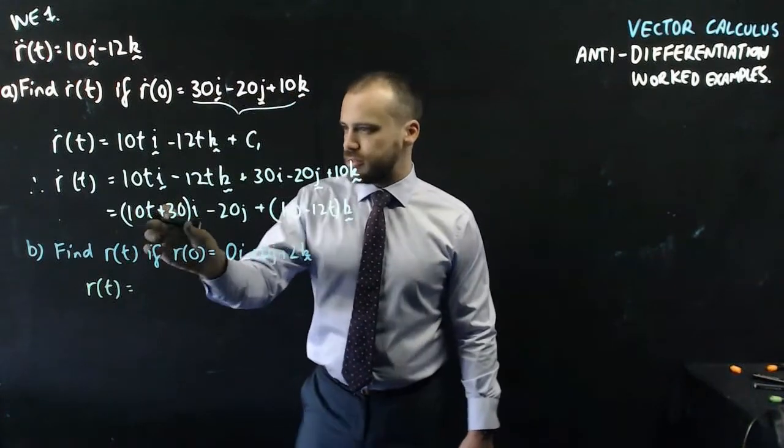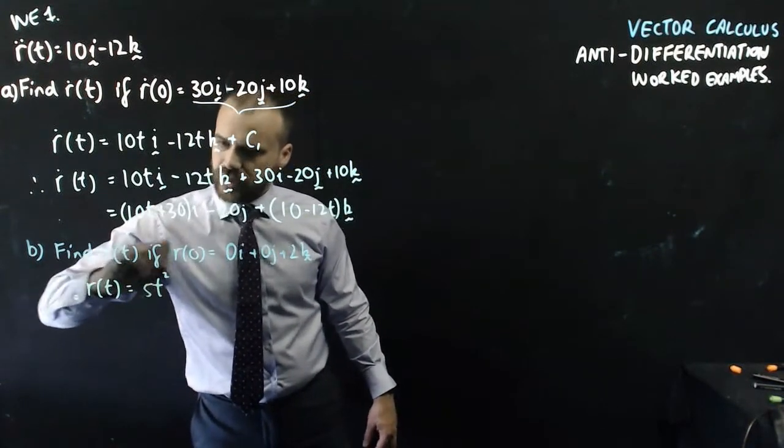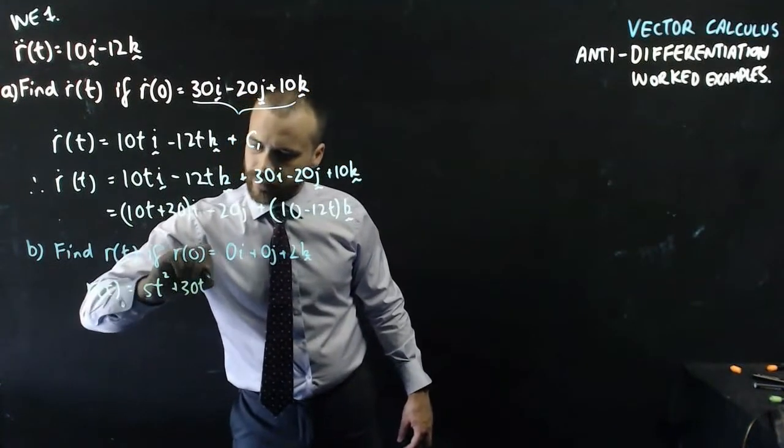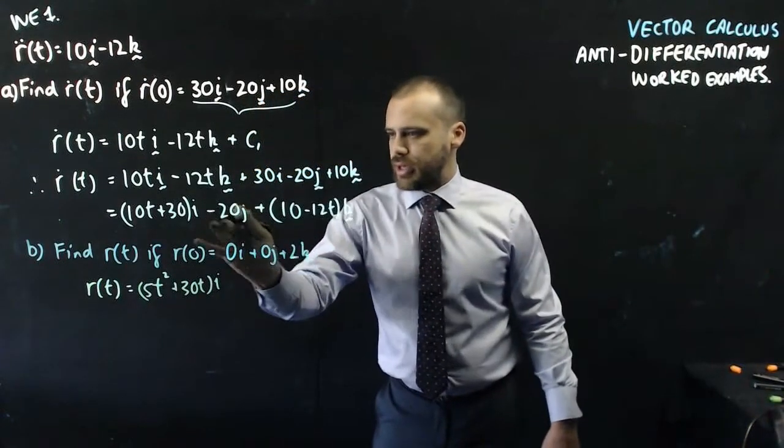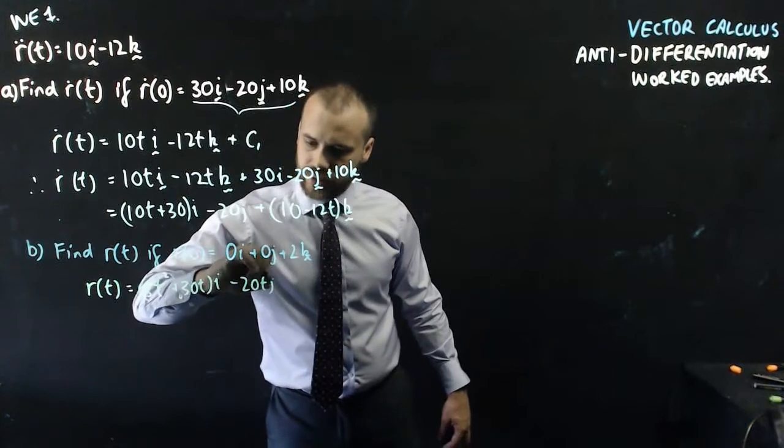anti-derive this bit. So we get t squared, 10 divided by 2 is 5, plus 30t, i. Now negative 20 is going to be negative 20t, j.